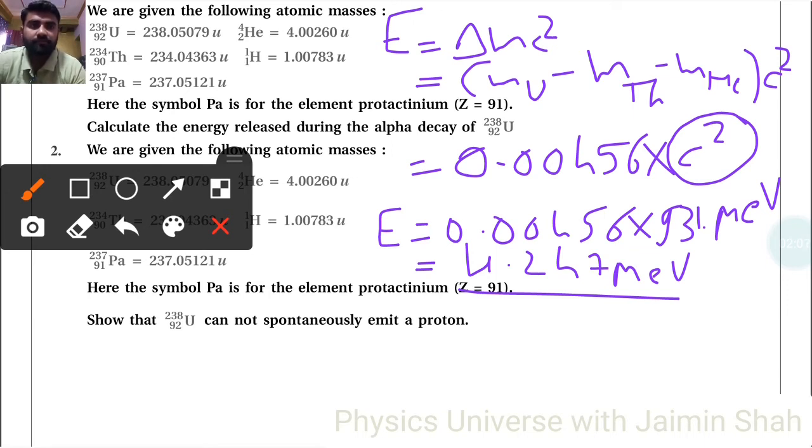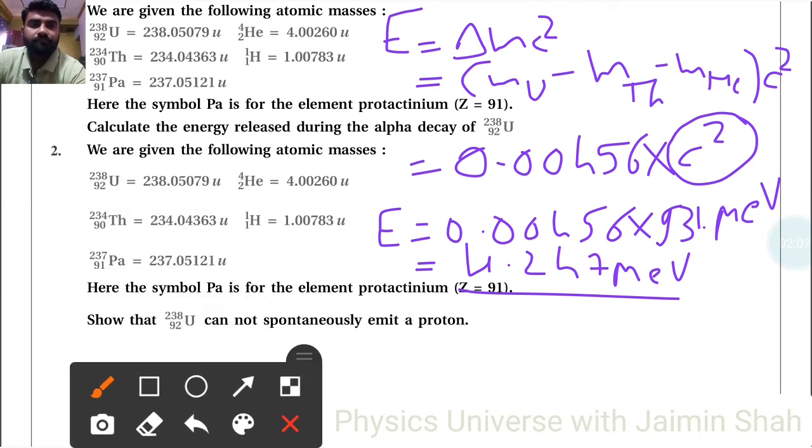Similarly, we have a second question also. We are given this form values, all the values here. It is also given: show that uranium cannot spontaneously emit a proton.